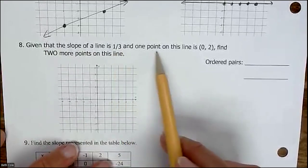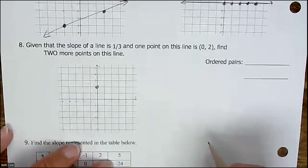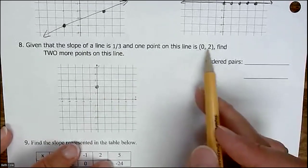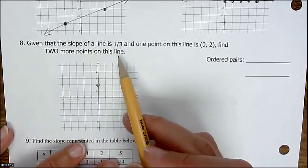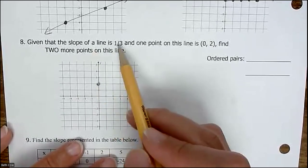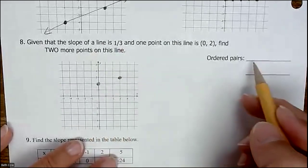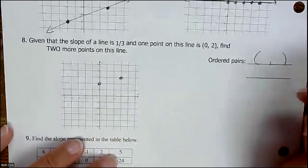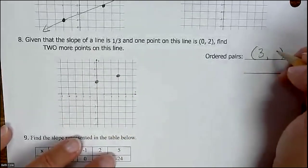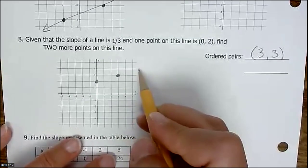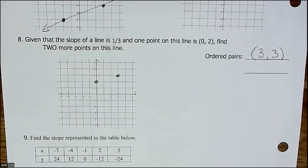Given that a slope of a line is one third, one of the points is 0, 2. Let's plot that 0, 2. It's going to be right there, 0 for x and then 2 for y. The slope is one third. We want to find two more points on the line. So from that point, we're going to go up 1 over 3. That's the first point I'm going to write over here. We want to write it as an ordered pair, so that point is 3, 3.